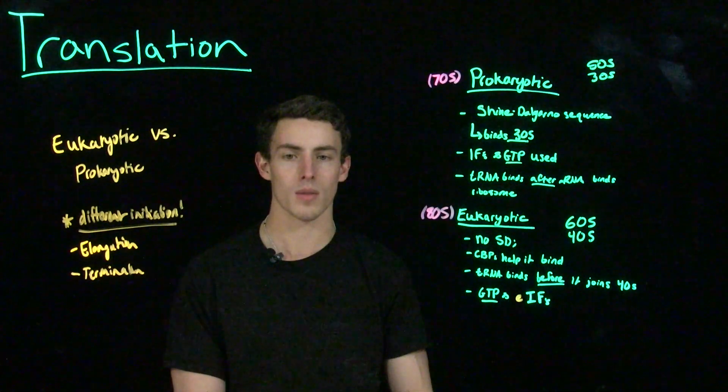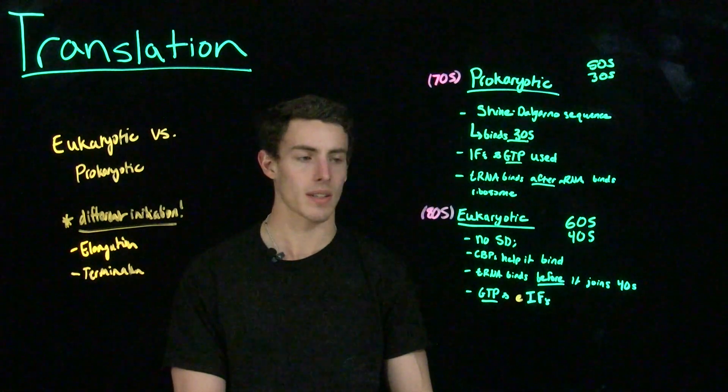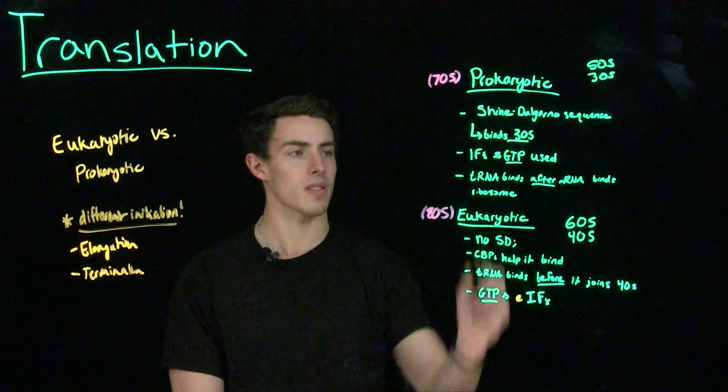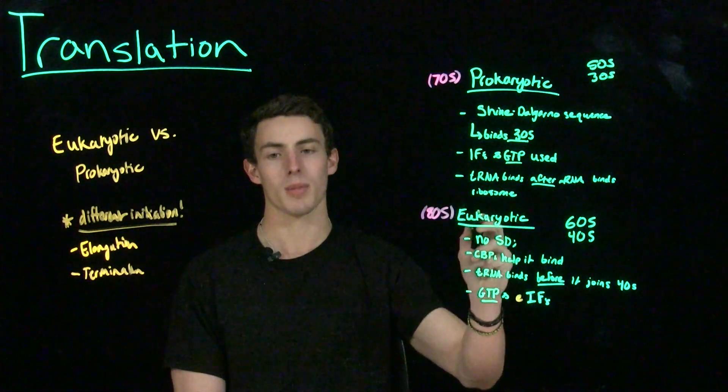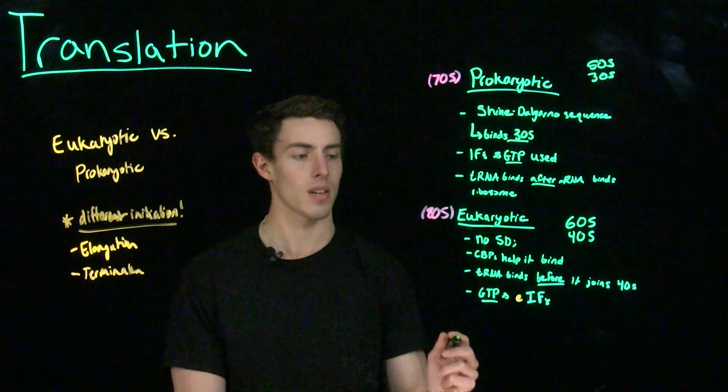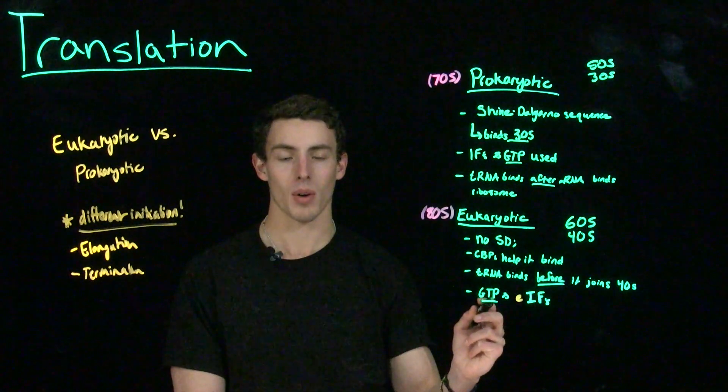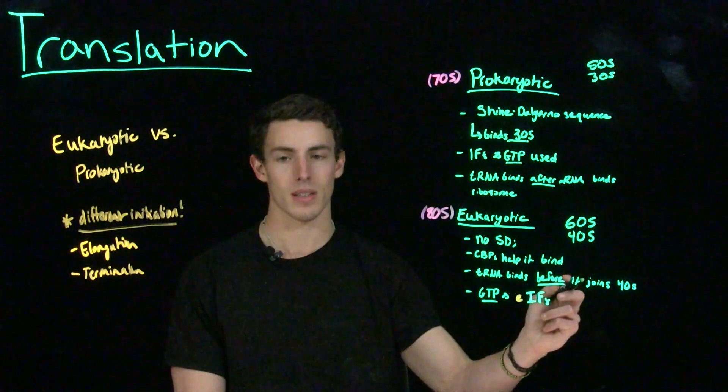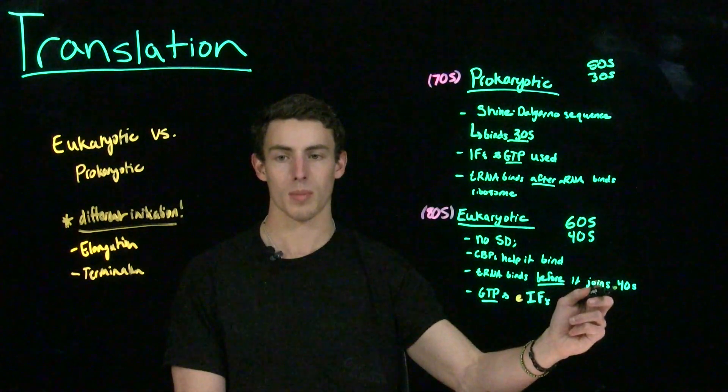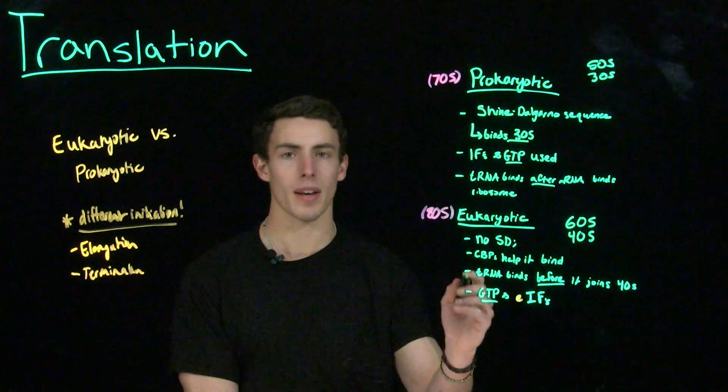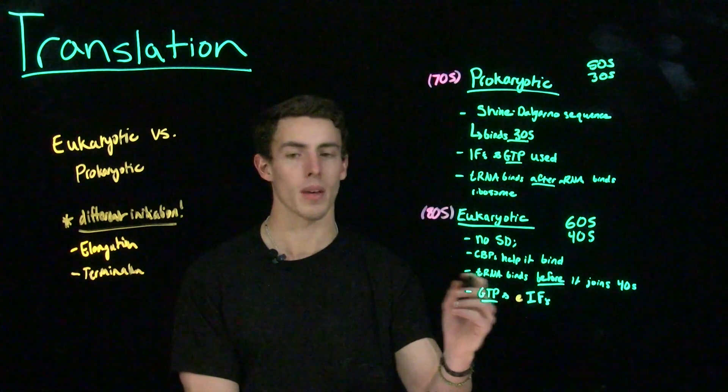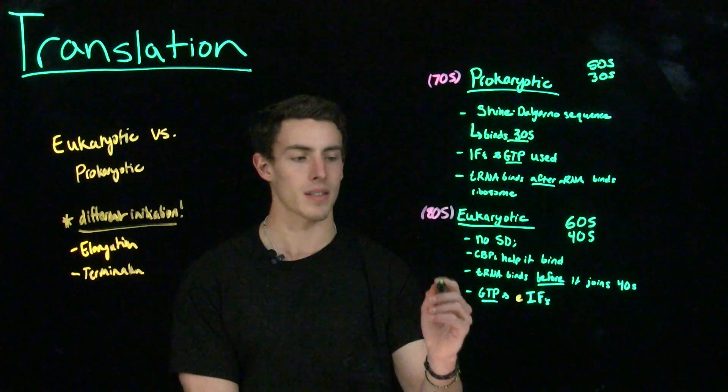One more very important difference between prokaryotic and eukaryotic translation is that in prokaryotic cells, tRNA is going to bind after mRNA binds to the ribosome. However, in eukaryotic cells, tRNA is going to bind to that mRNA molecule before it joins that 40S ribosomal subunit. So essentially, before mRNA binds to the small subunit of the ribosome, the initiator tRNA is going to bind to the start codon.